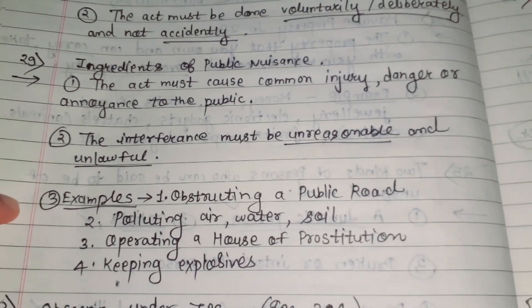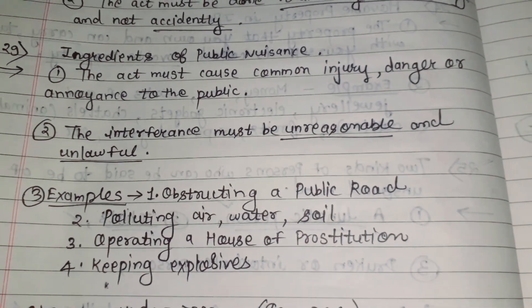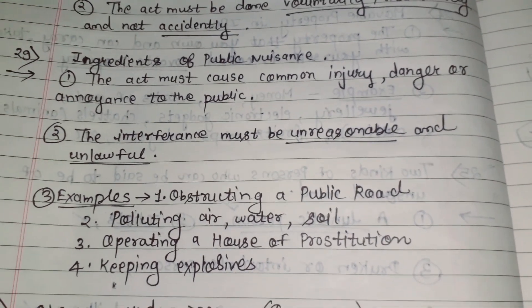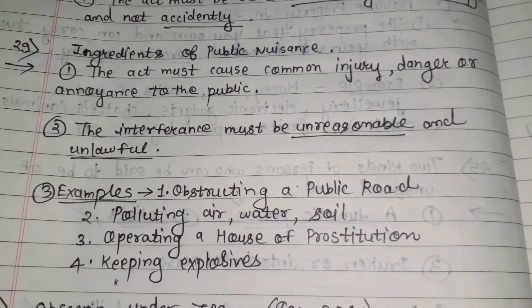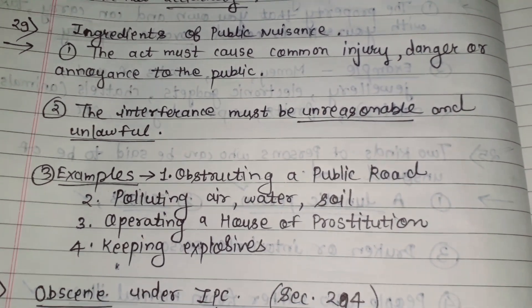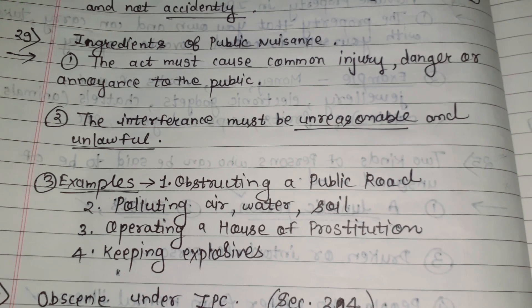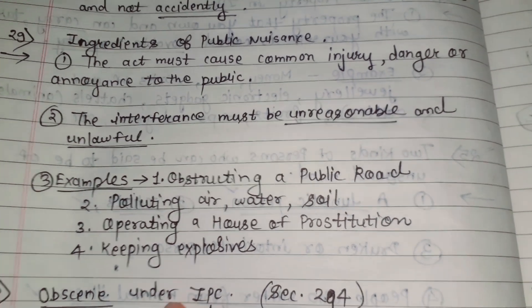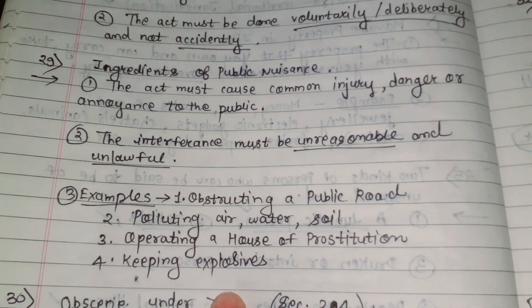Examples of public nuisance include obstructing a public road, polluting air, water, or soil, operating a house of prostitution, or keeping explosives.